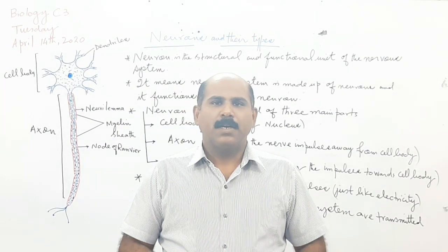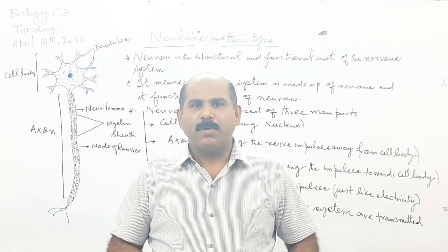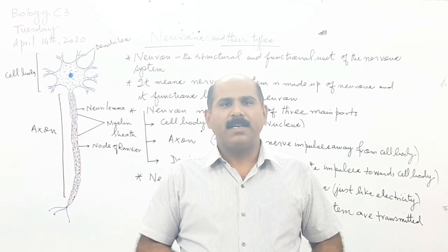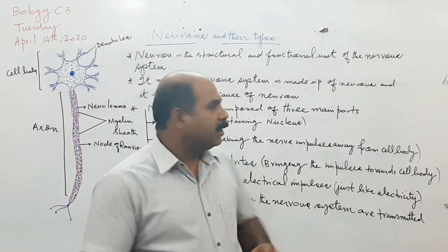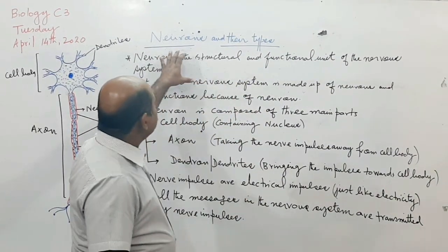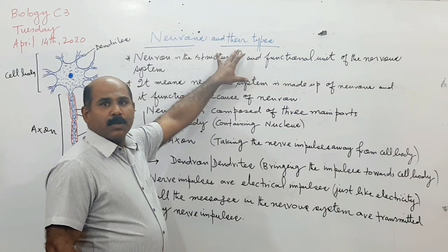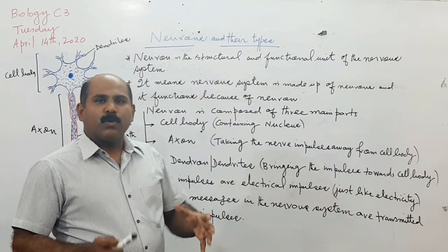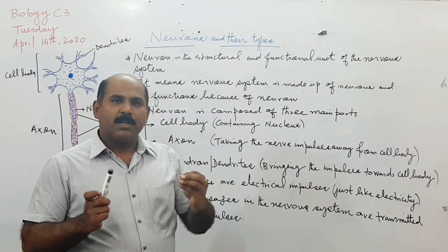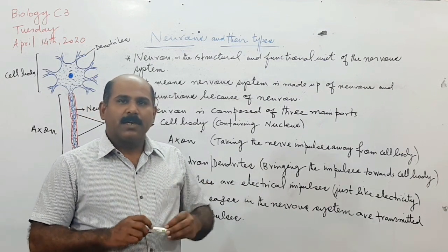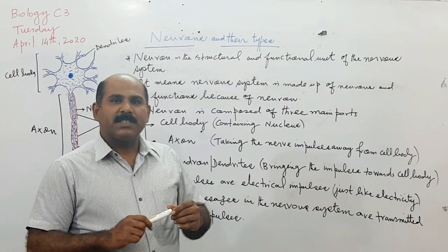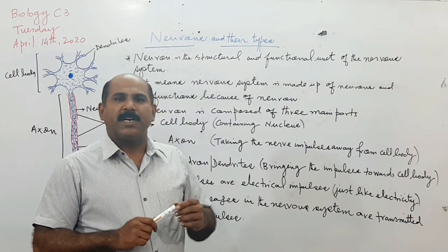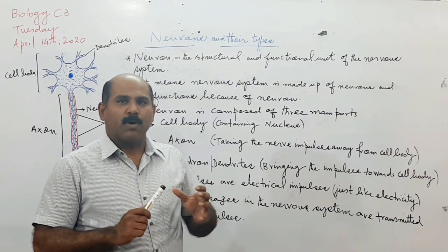Good morning class. Today we are going to discuss the second part of this chapter. As we discussed yesterday, it was basically on the concept of coordination, but today we are going to discuss the basic component of coordination, and that basic component of coordination is the neuron.